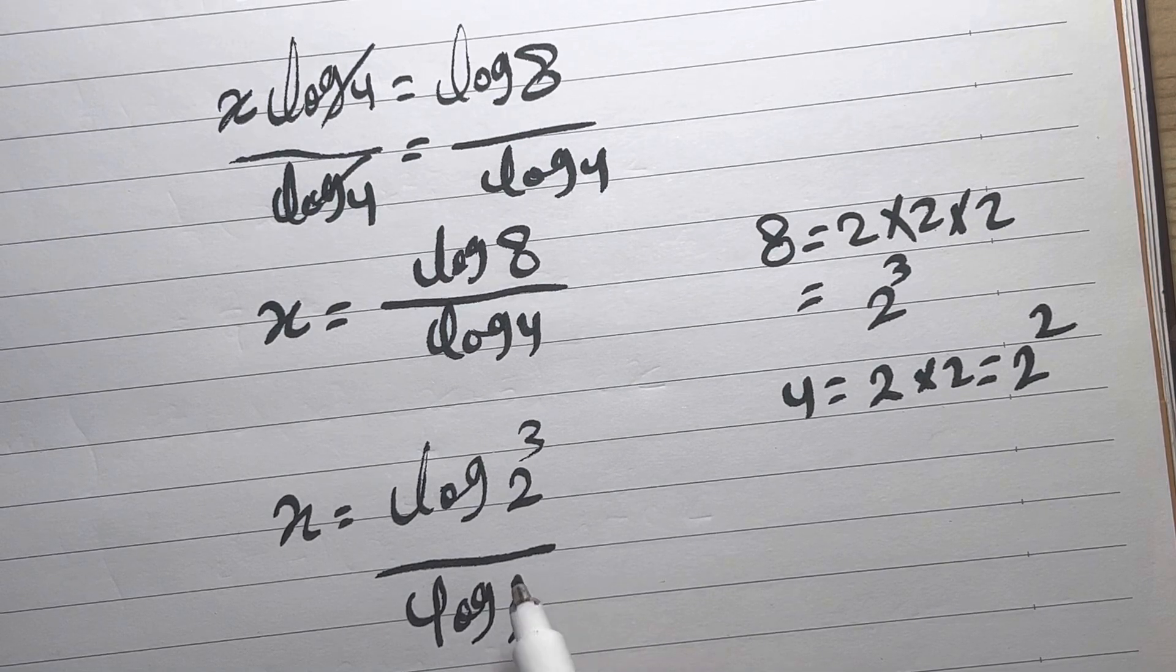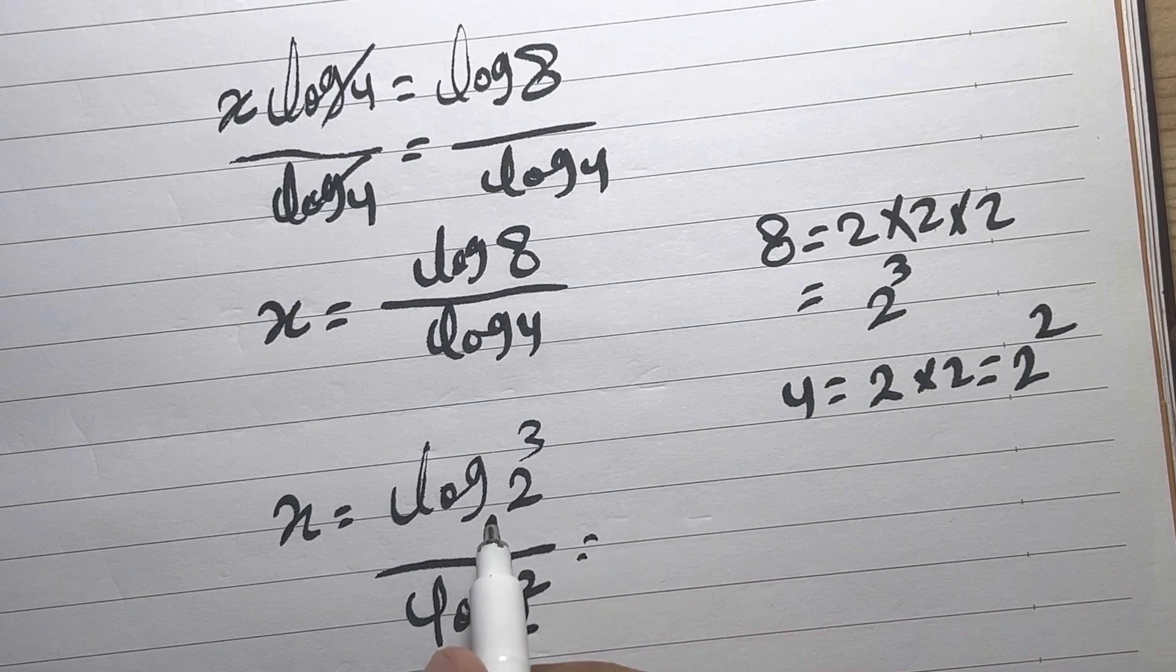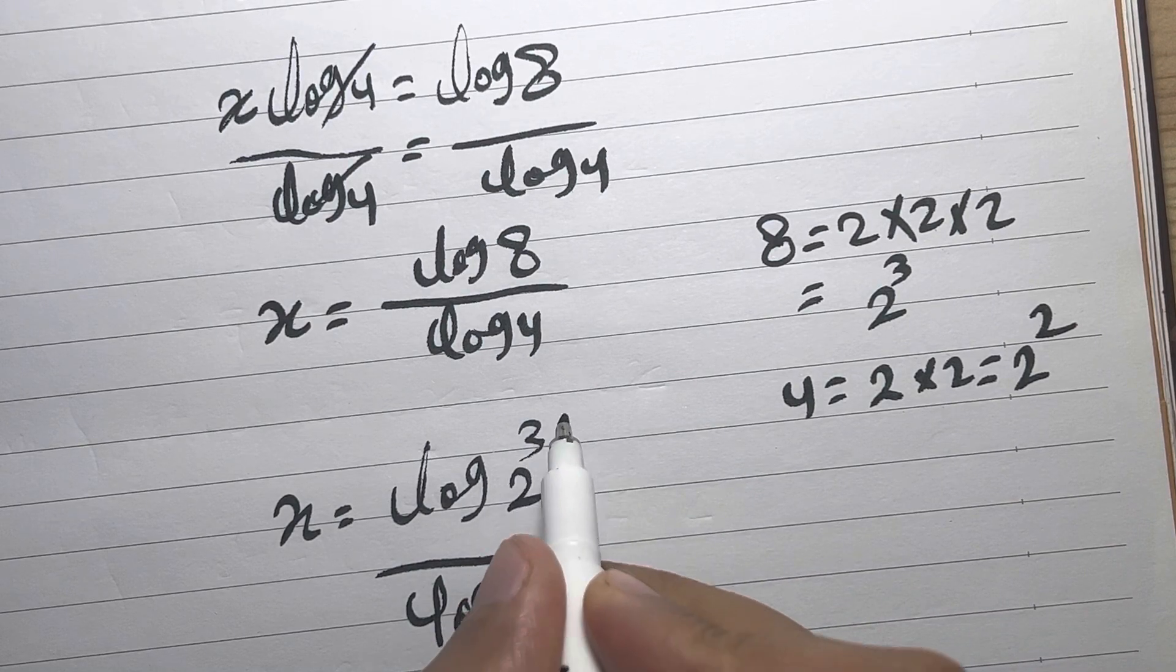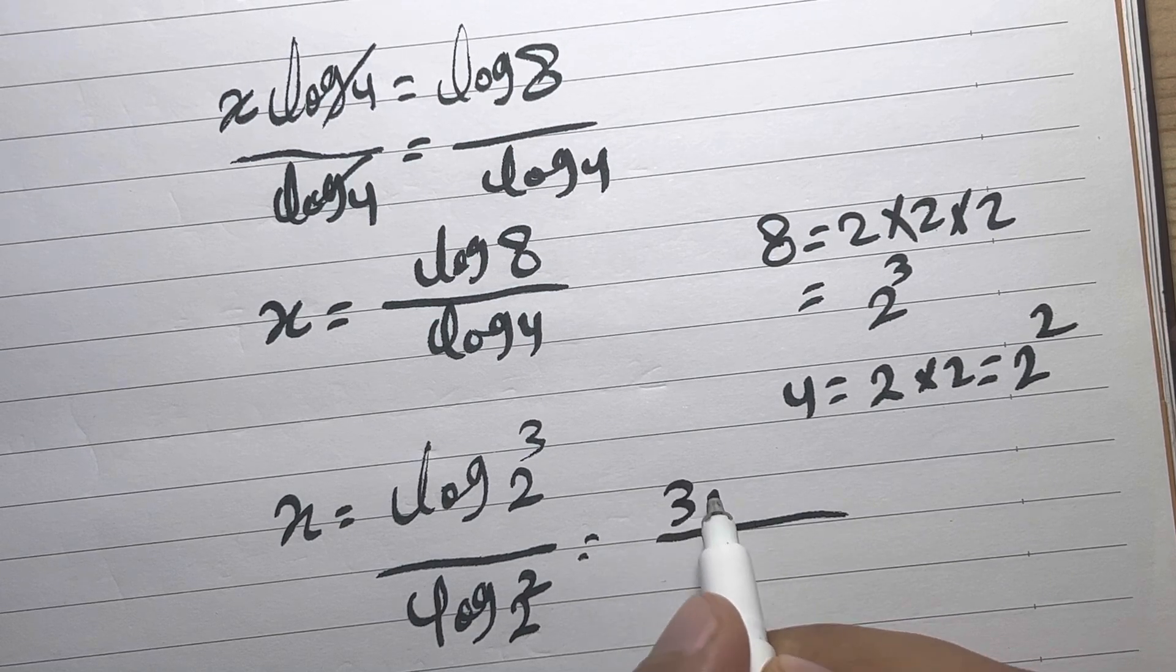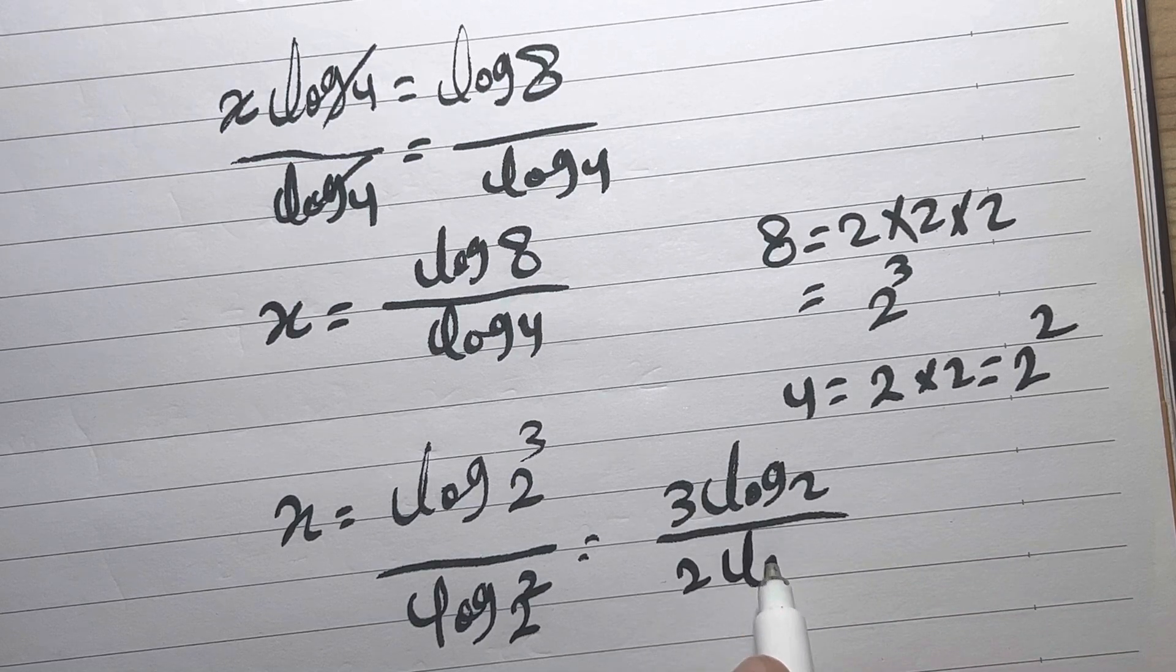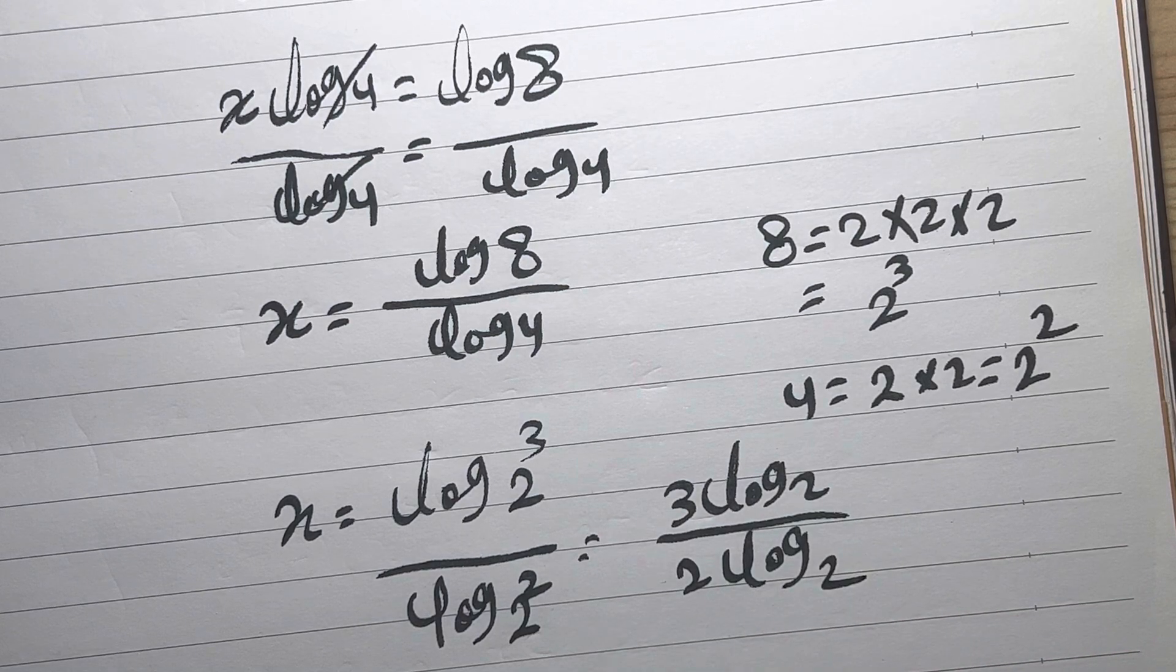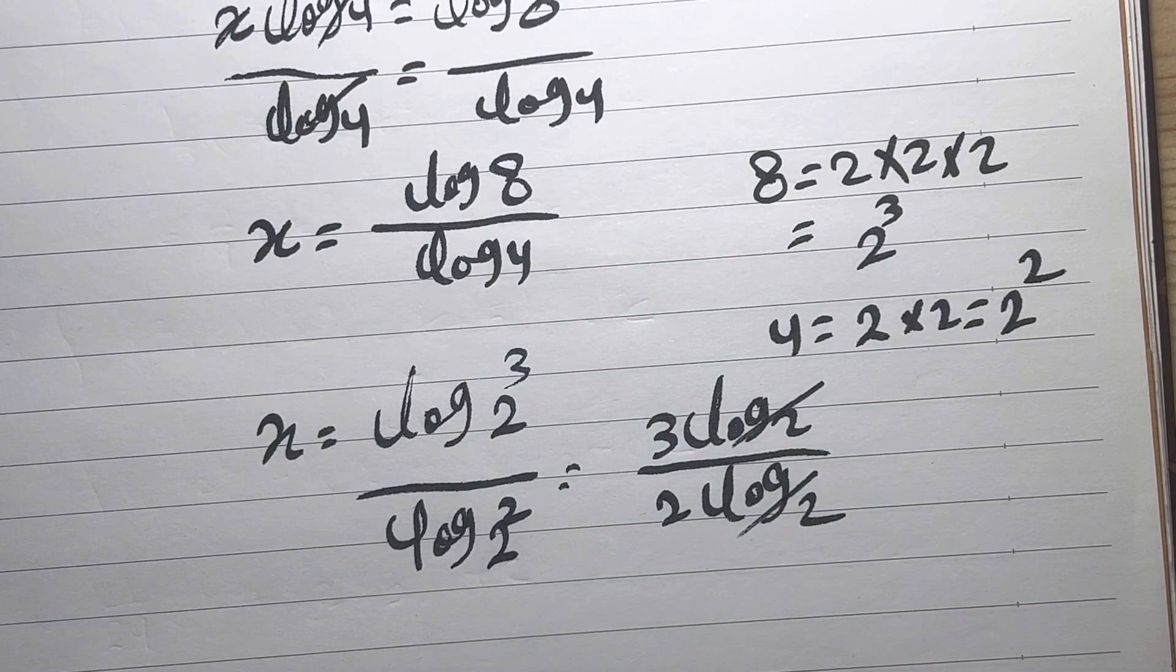As we used this identity before, we are going to use it with the 3 beside the log here: 3 log 2 divided by 2 log 2. Then we will cancel this one with this one.